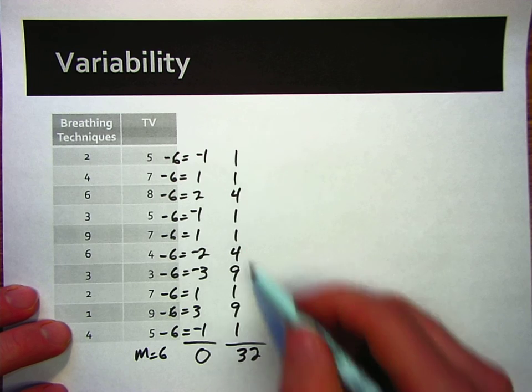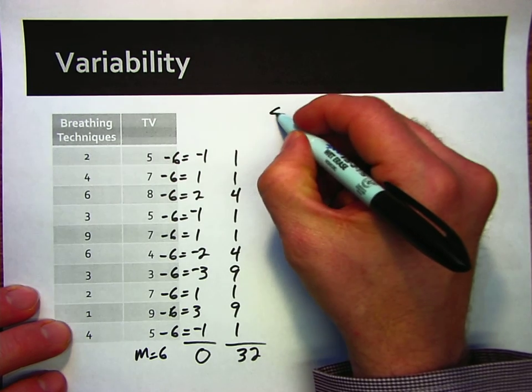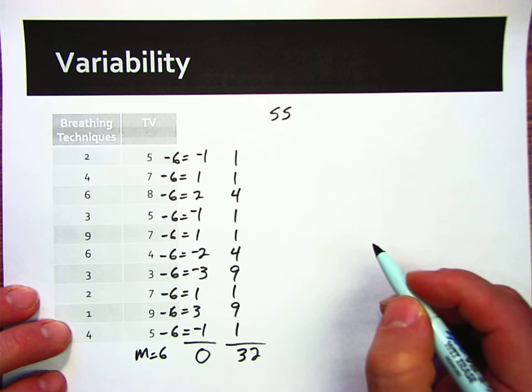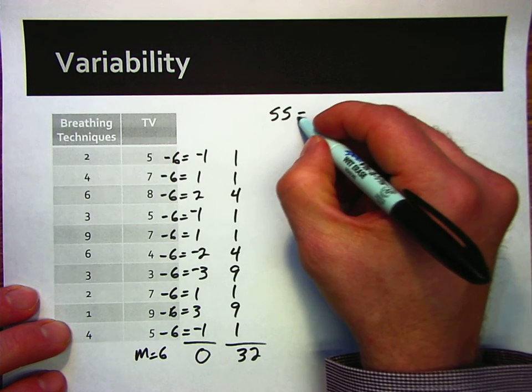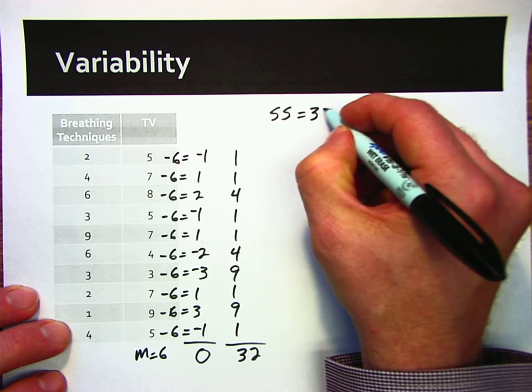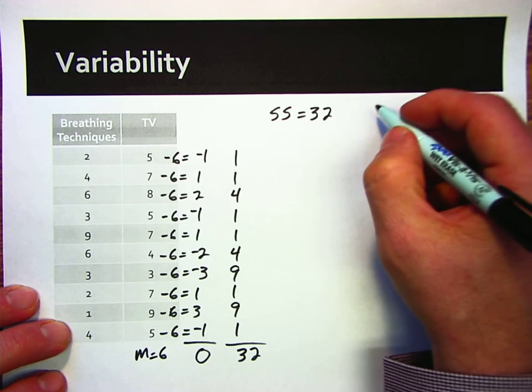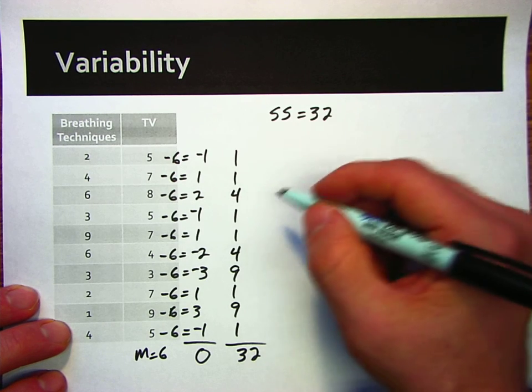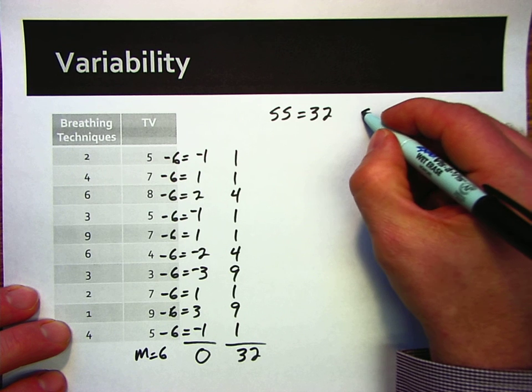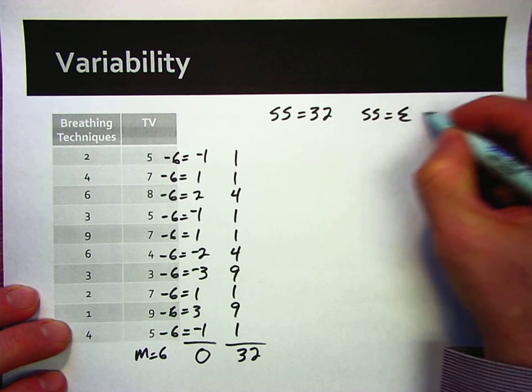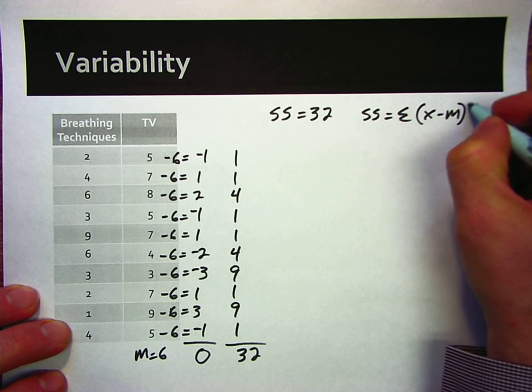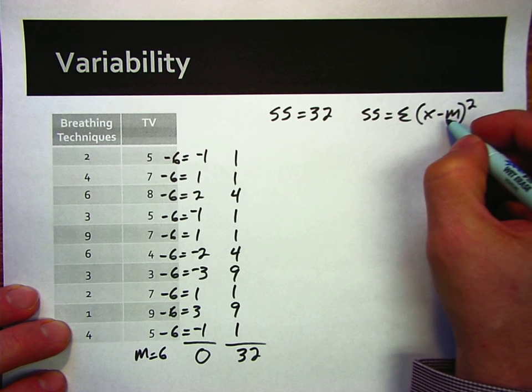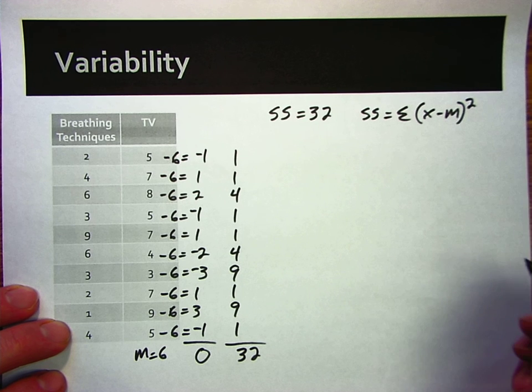What we've just calculated here is what we call the sum of squares. We use SS to signify that as the symbol for that. Sum of squares, or sum of squares here, equal 32. And the definitional formula, what we just used was the definitional formula for that, looks like this. So we took each score, subtracted the mean from it, we squared it, and then we added all those up. That was the sum of squares.